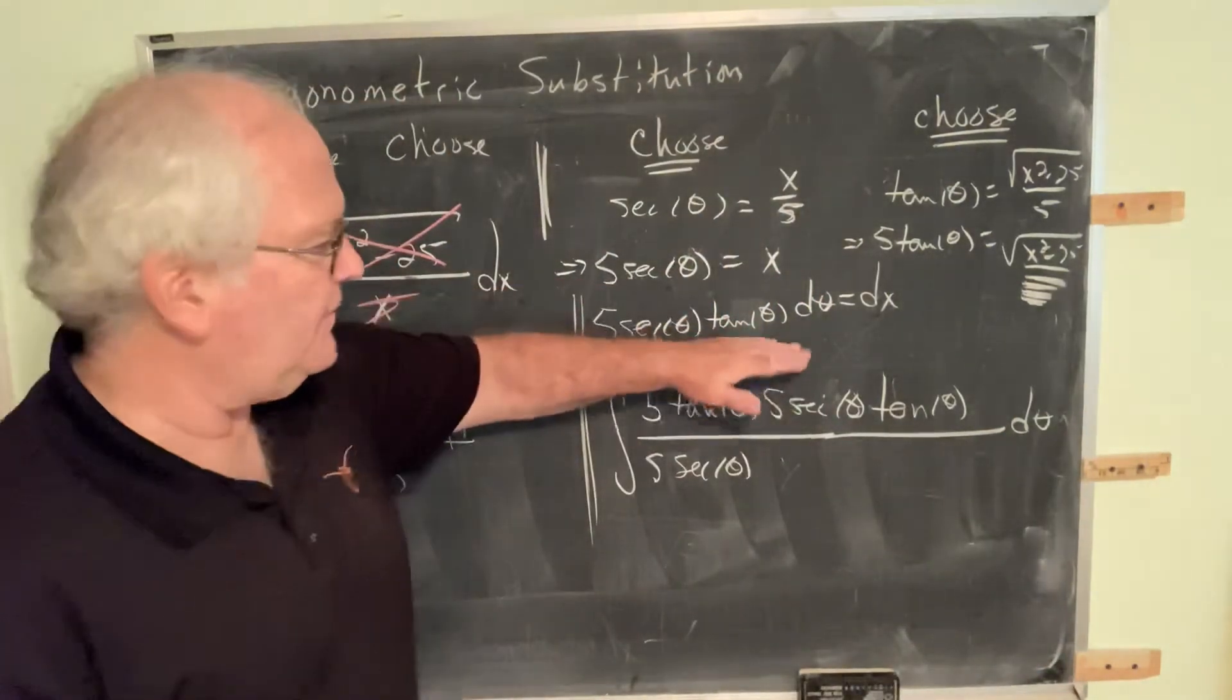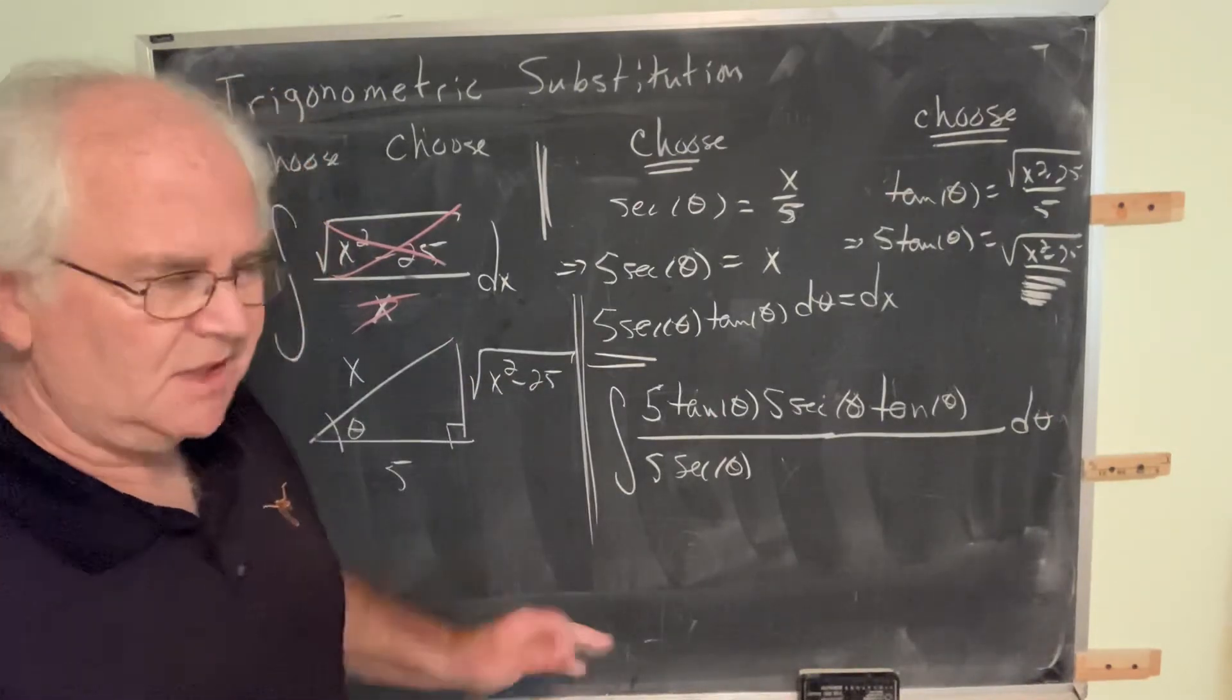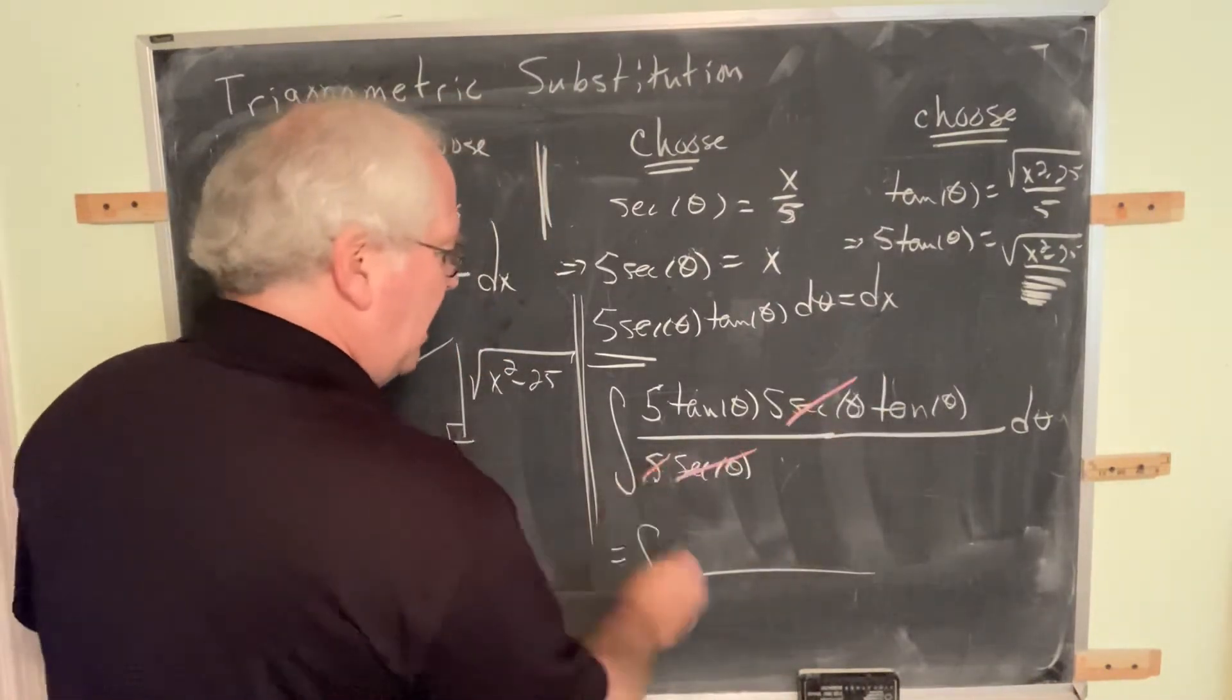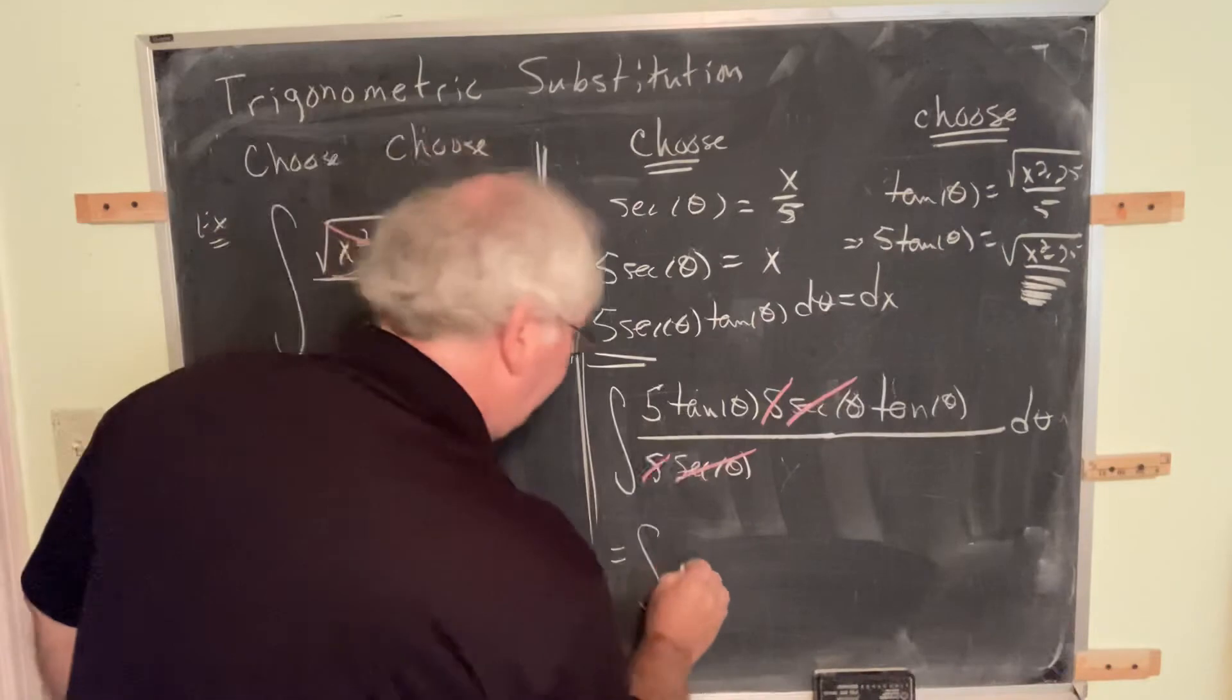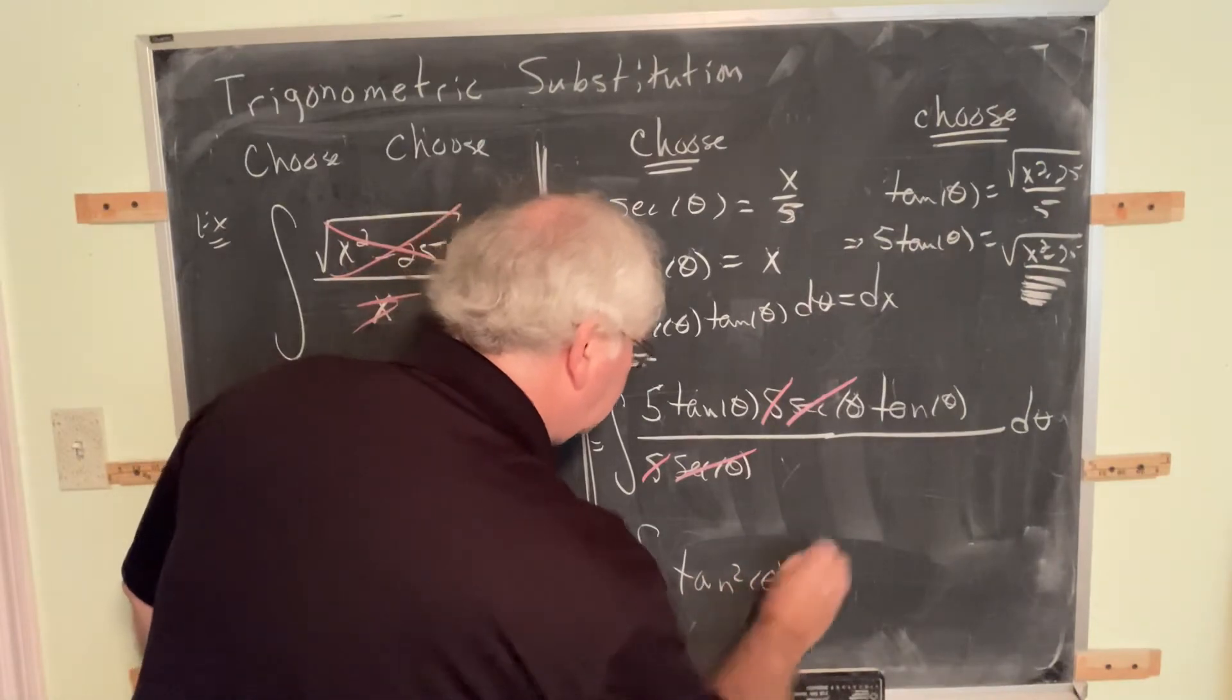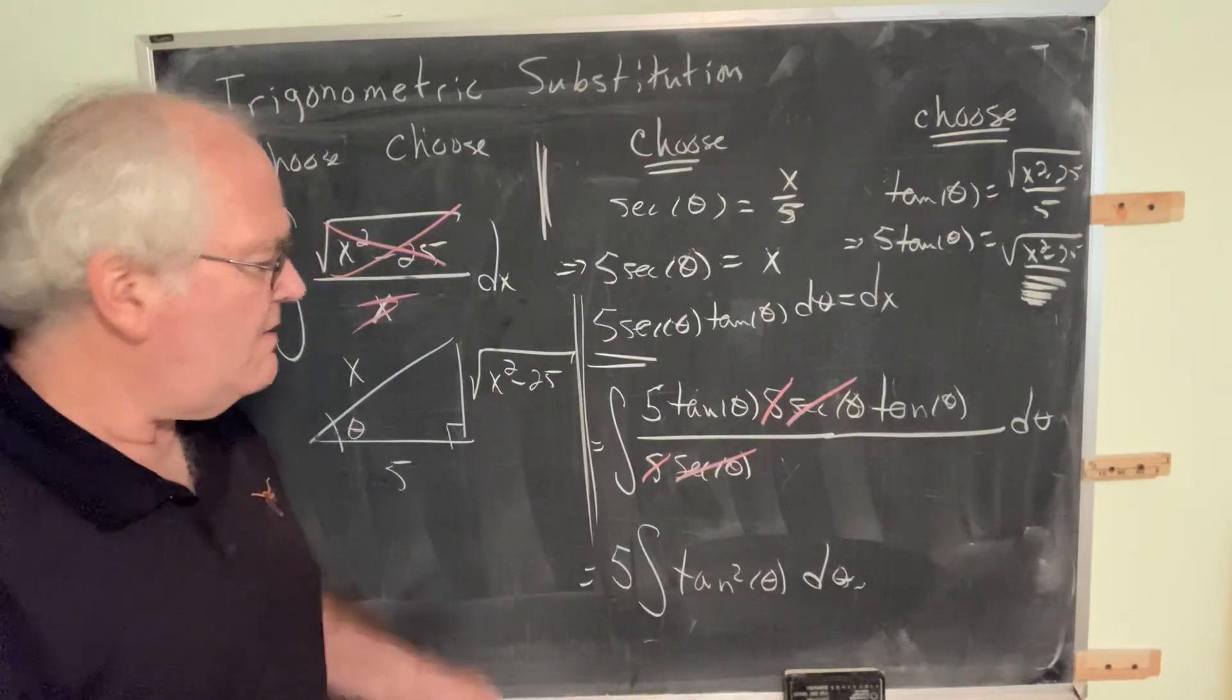So, now simplify. Let's see. Secant cancels with secant. This five cancels with one of the fives. And so, what we're left with in this scenario is five, which you may if you like, put in front of the integral, tangent squared d theta. And now, proceed as before in the previous section. Proceed as before in the previous section. That's the process.